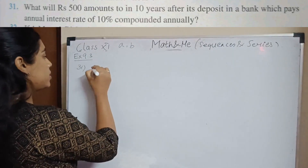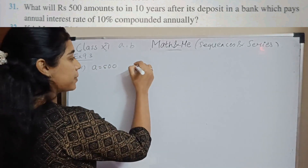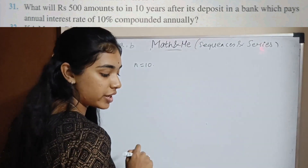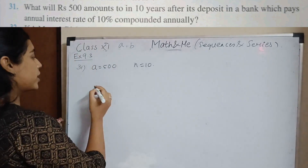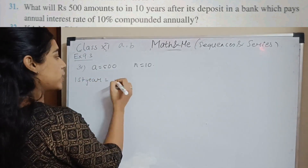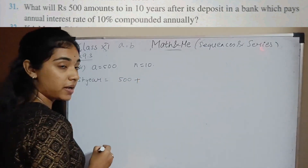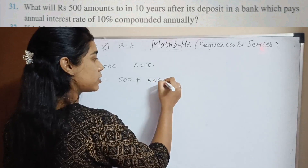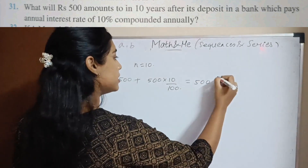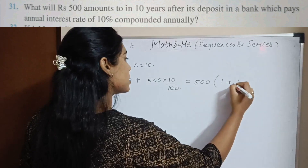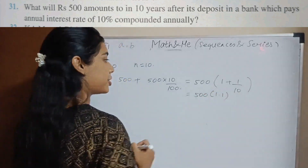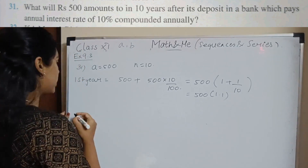Question 31: The initial amount is 500. We want to find the amount after 10 years, so n equals 10, deposited in a bank that pays an annual interest rate of 10 percent compounded annually. In the first year, you take the 500 plus 10 percent of 500, giving 500 times (1 plus 1/10), which is 500 times 1.1.